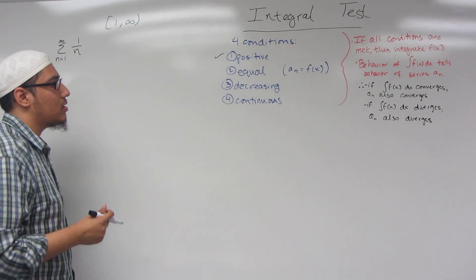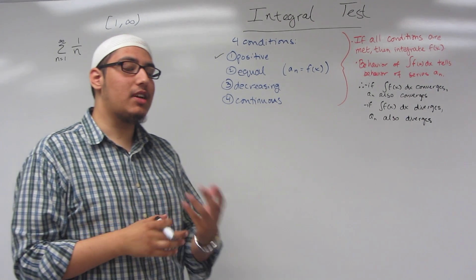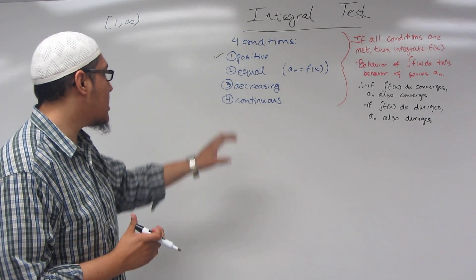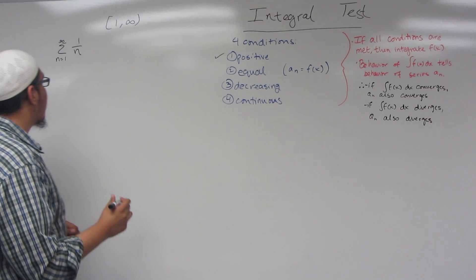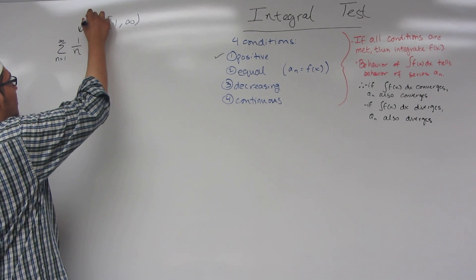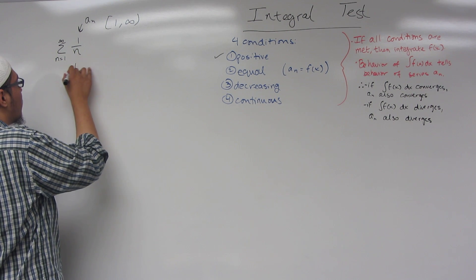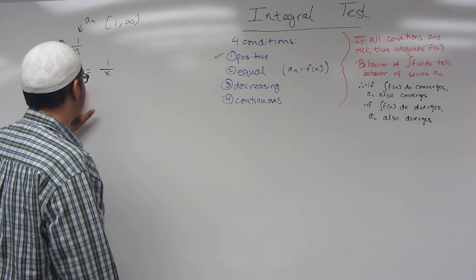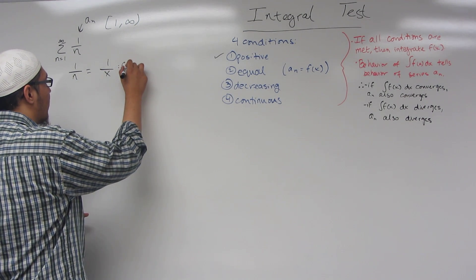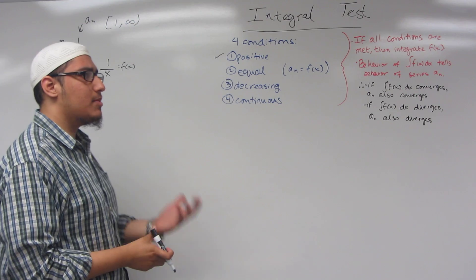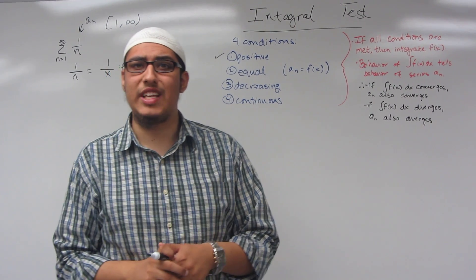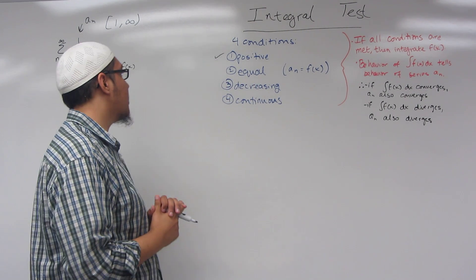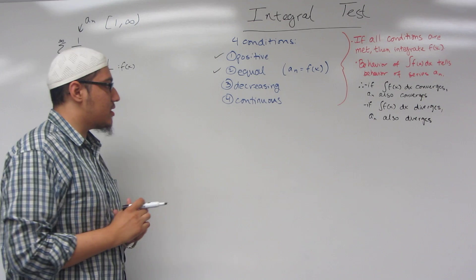Condition number two is 'equal.' A lot of books don't include this step, but the idea is that we can rewrite the series — a sub n — as a function: 1 over n becomes 1 over x, setting it equal to f of x. This is because when we take the integral, we're familiar with integrating with respect to x. Condition number two is met.